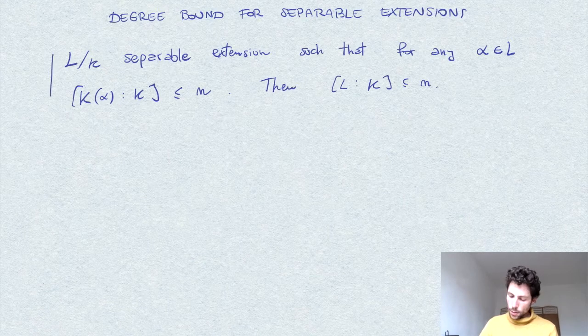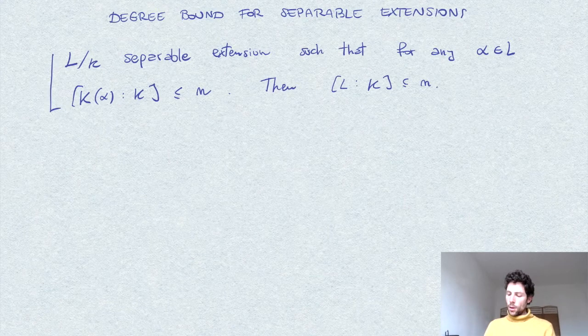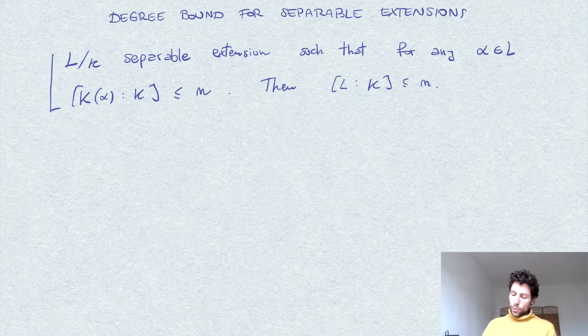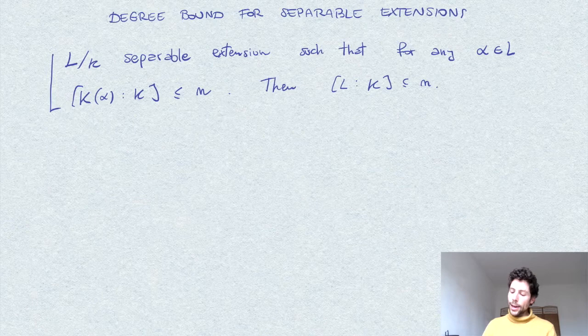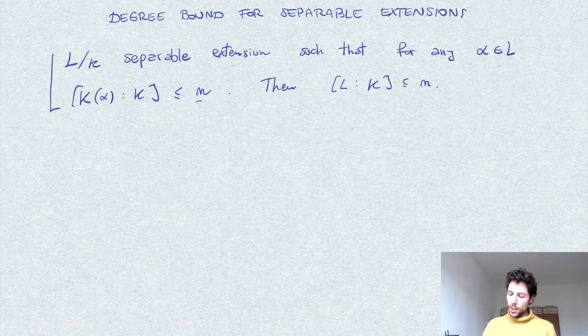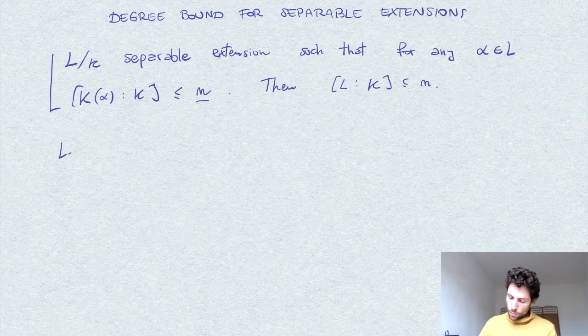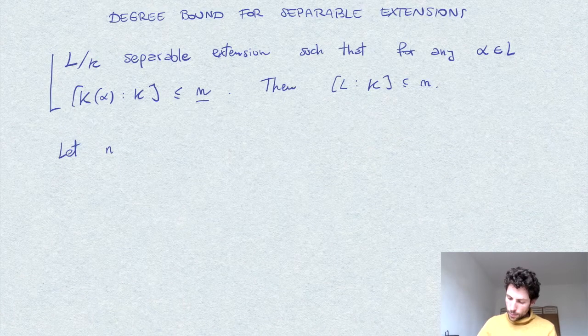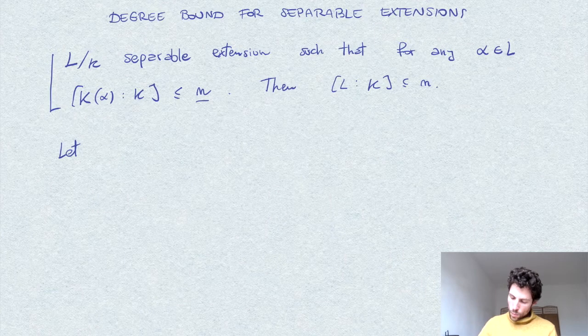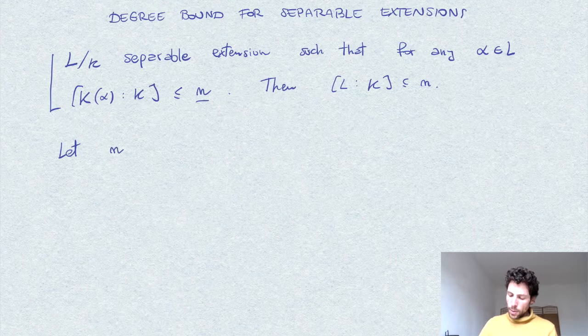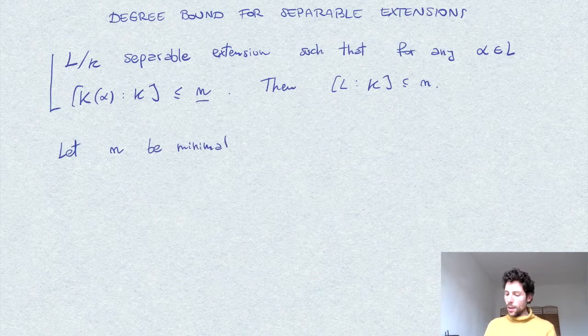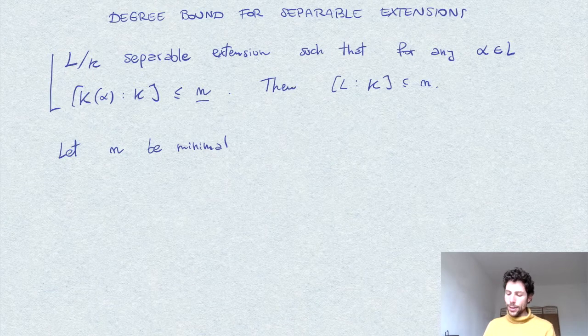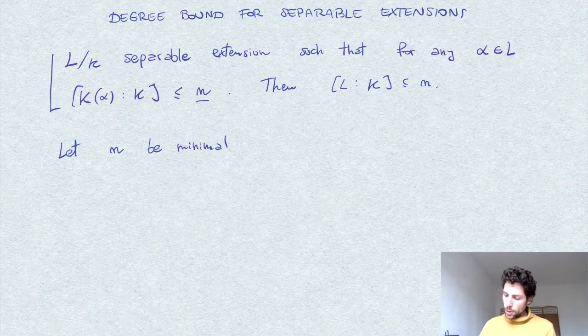So this is the statement. And we prove it by contradiction. First of all, let's pick n, this integer n minimal. Let n be minimal. So there is an element of degree exactly n, and n is the minimal with the property in the statement.